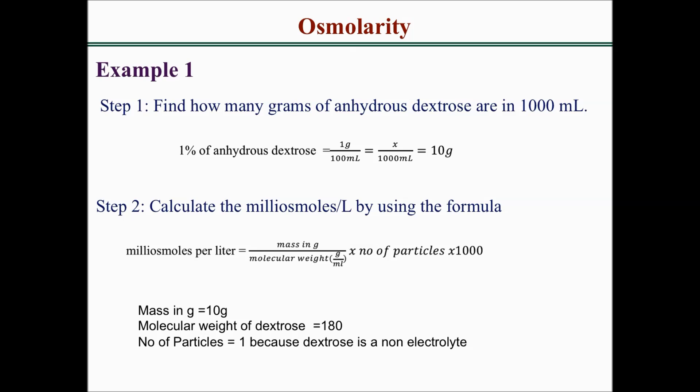We've already calculated the mass in grams, which is 10. We are given the molecular weight of dextrose, which is 180. We need to determine the number of particles. The number of particles will be 1 because dextrose is a non-electrolyte and it's not going to dissociate into any ions.